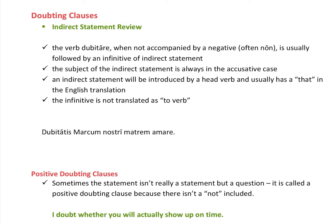We're going to talk about doubting clauses this week. This first bit will be familiar because it's about indirect statements. The verb dubitare, when not accompanied by a negative, is usually followed by an infinitive of indirect statement. The subject of the indirect statement is always in the accusative case even though it takes the role of the nominative. An indirect statement is introduced by a head verb — to think, to see, to hear, to doubt, to know — and usually has 'that' in the English translation. The infinitive will not be translated as an infinitive but as a regular verb.